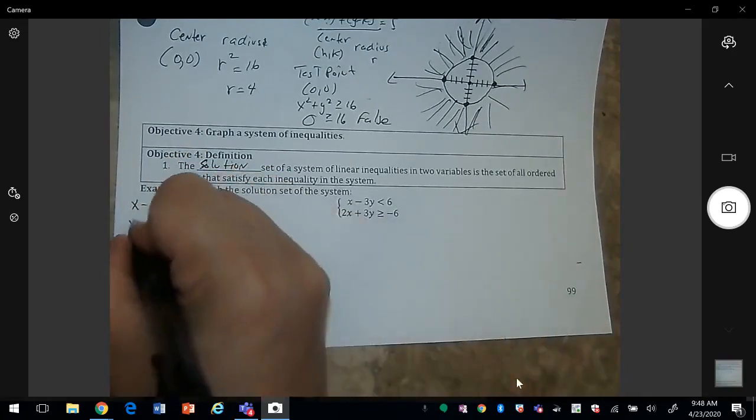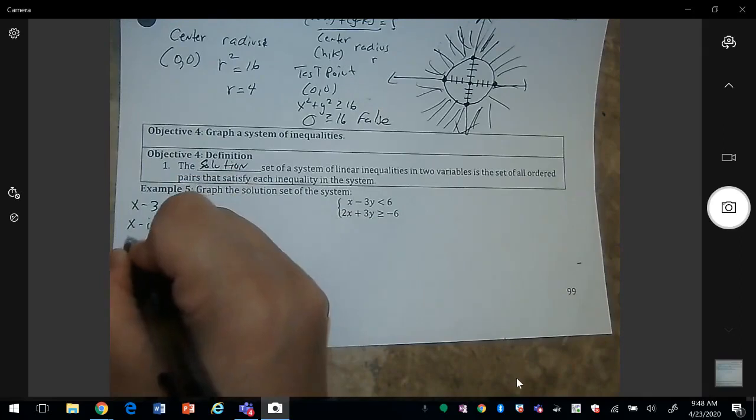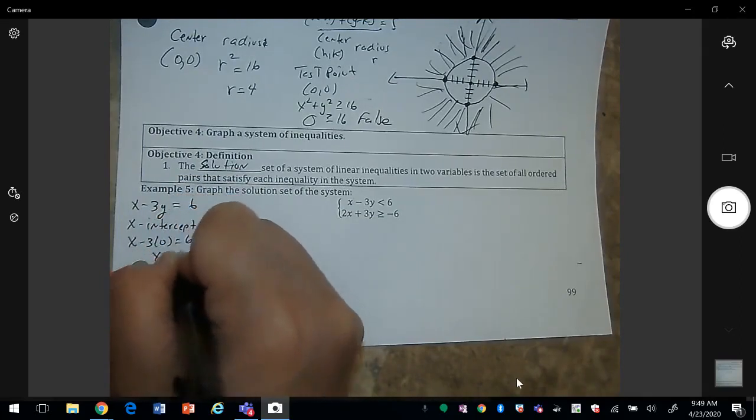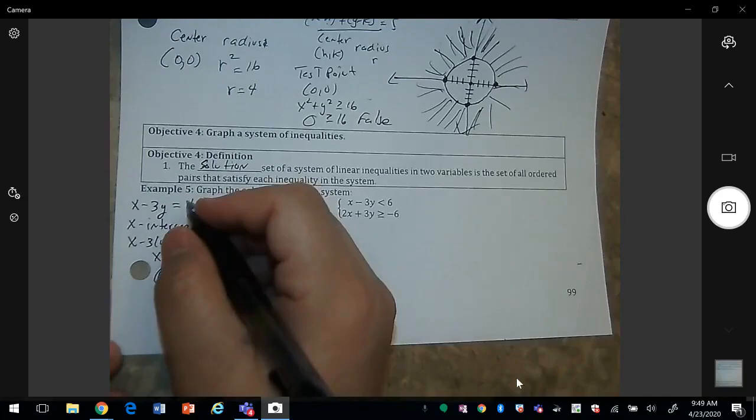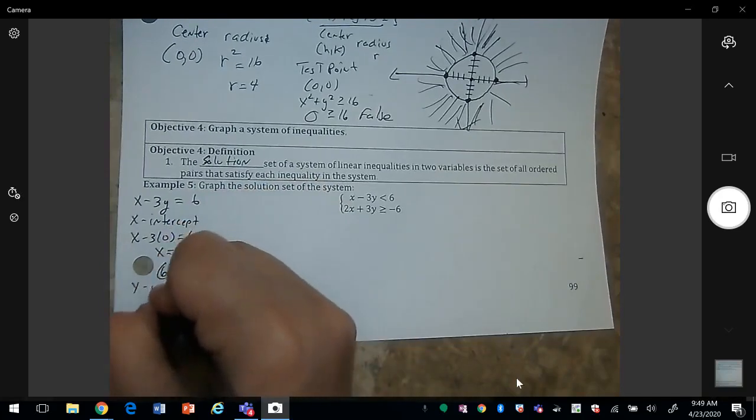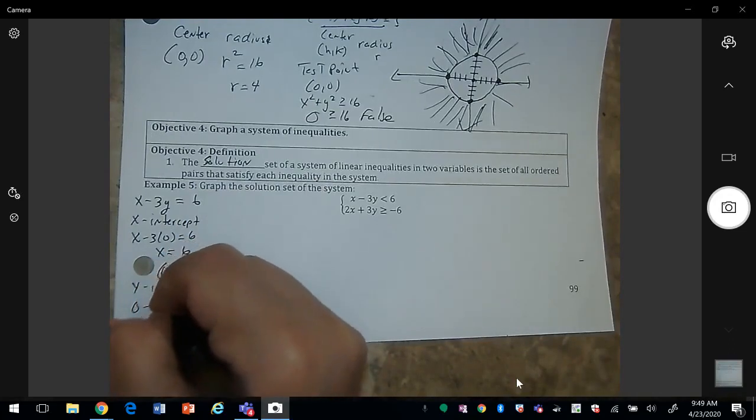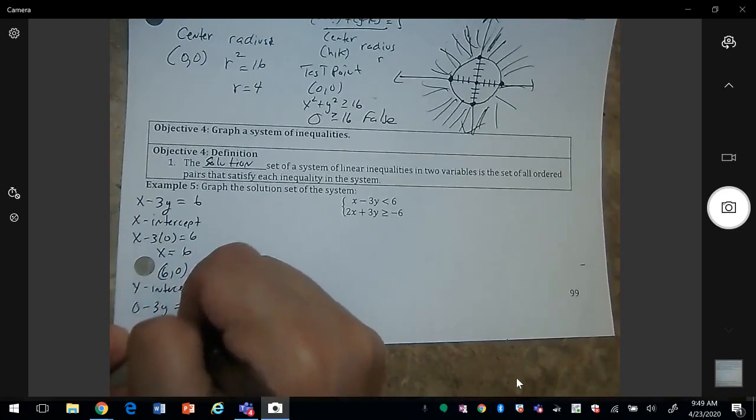You can use any method, so I'm going to use the x-intercept. That means that x will be 6. And then I'm going to use the y-intercept. That means x is 0. So here, y would give me a negative 2.